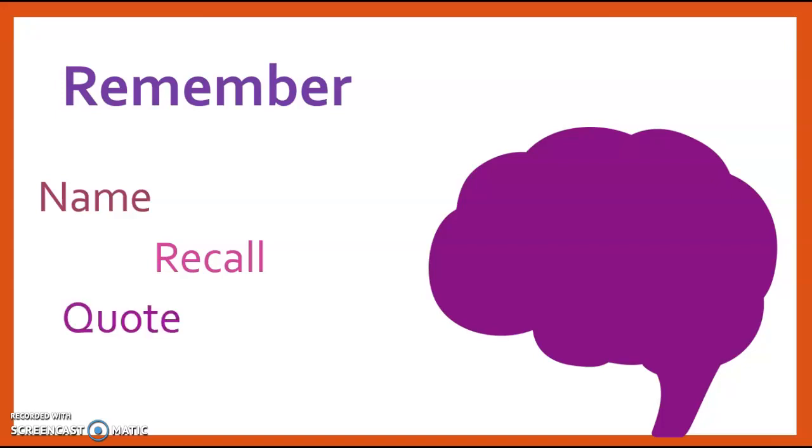We might be able to quote things. We can quote Patrick Henry, who said, give me liberty or give me death. And we may even be able to recite something, a part of a poem or a piece of the Gettysburg Address. So this is basically, we're just getting those details into our brain.